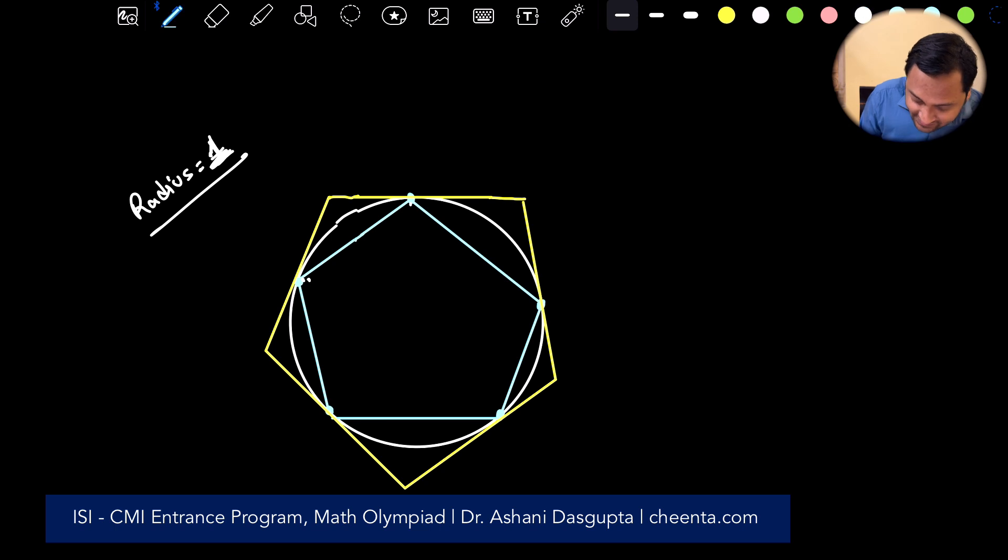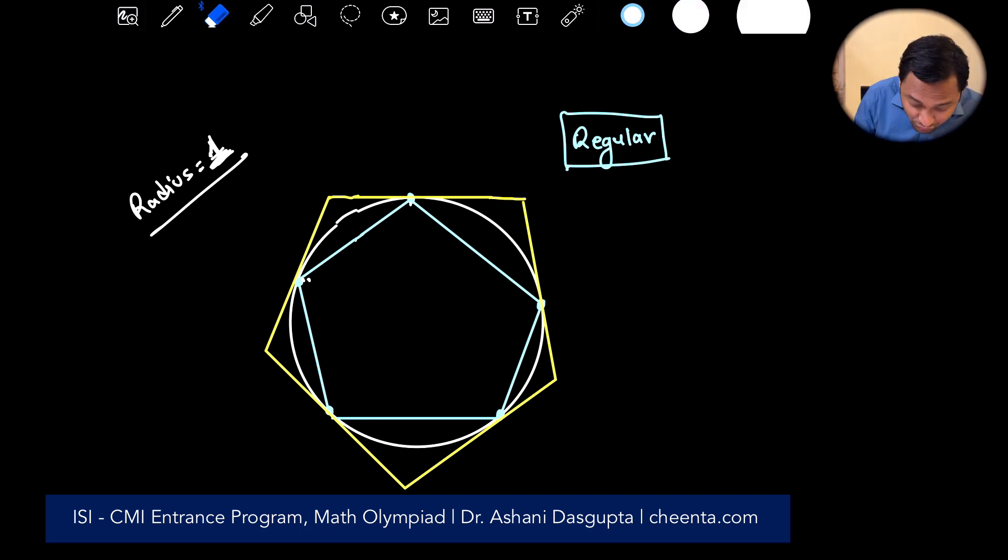Some kids in our math olympiad programs get very confused by the word regular. So I want to define it very precisely. What does regular mean? What means a polygon is regular? Is it sufficient to say that all sides are equal? Well, you have to be very careful about it. If you just say all sides are equal, think about quadrilaterals. If all sides of a quadrilateral are equal, it can be a rhombus which is not a square. That is not a regular polygon. So for a polygon to be regular, it has to satisfy two conditions: all sides equal and all angles equal.